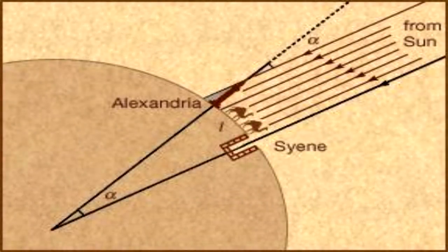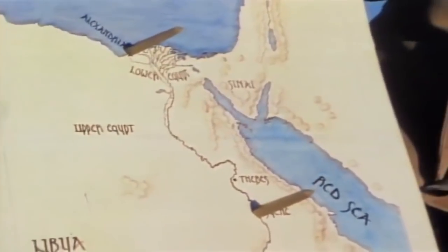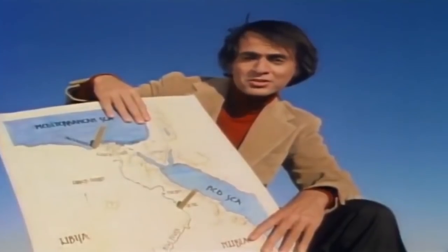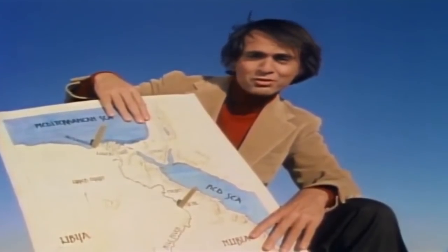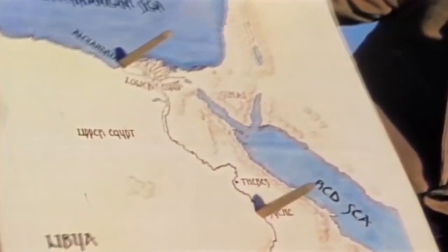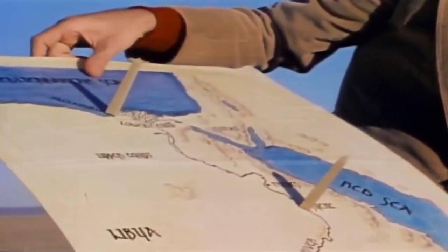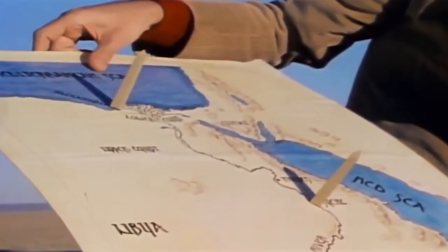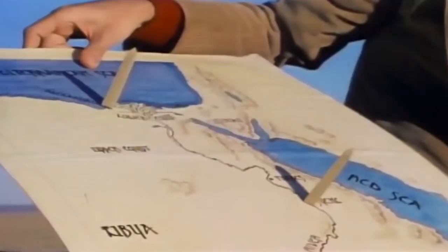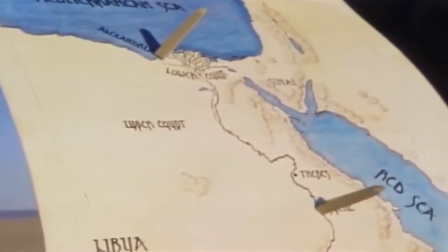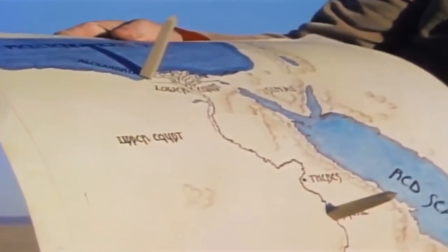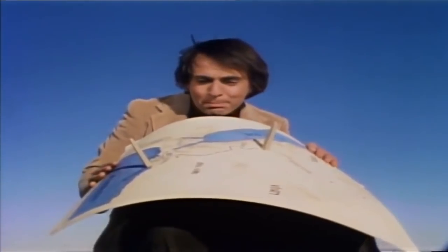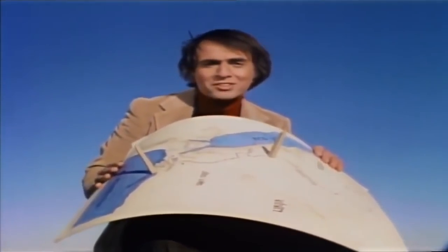Eratosthenes, Carl Sagan, and other globe proponents reason that this result is impossible on a flat earth. To quote Carl Sagan: 'If at a certain moment each stick casts no shadow at all, that is perfectly easy to understand, provided the earth is flat. If the shadow at Syene is a certain length and the shadow at Alexandria is the same length, that also makes sense on a flat earth. But how could it be,' Eratosthenes asked, 'that at the same instant there was no shadow at Syene and a very substantial shadow at Alexandria?' The only answer, he claimed, was that the surface of the earth is curved.